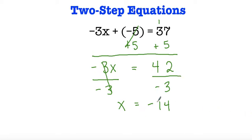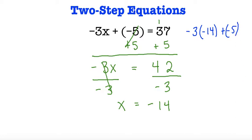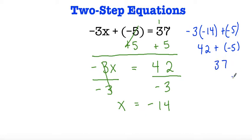So positive divided by a negative is a negative. And if I wanted to go back and check my work, I would substitute negative 14 for x. So negative 3 times negative 14 plus negative 5: 14 times 3 is 42, and a negative times a negative is a positive. If I added negative 5 to 42, I would get 37. So this is true.